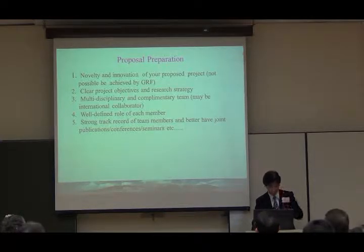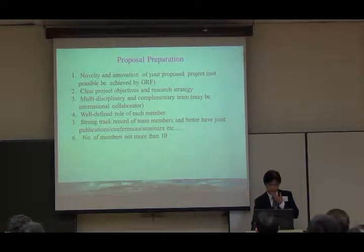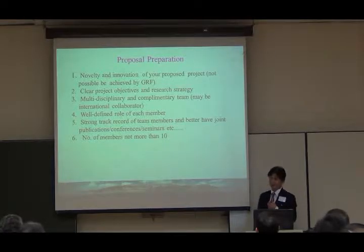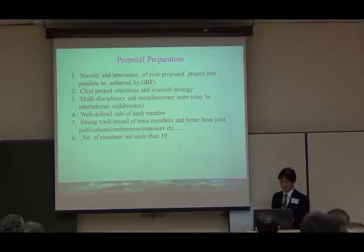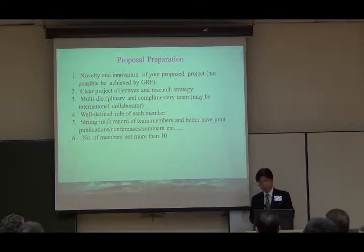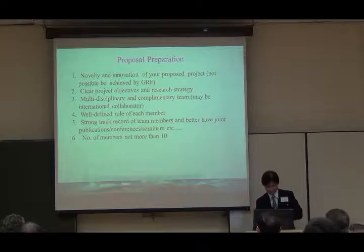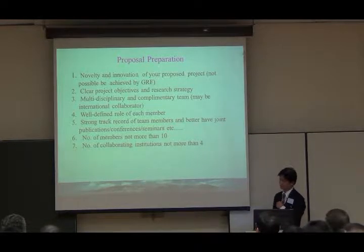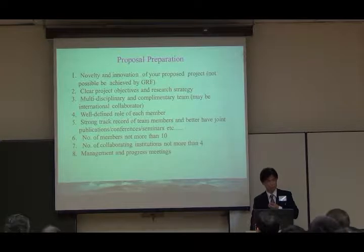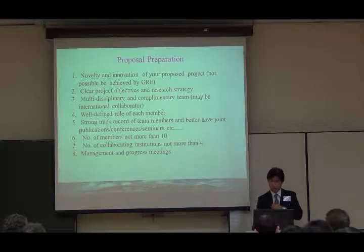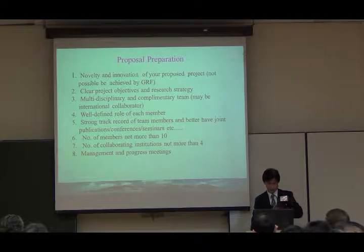My gut feeling — because I failed twice by having too many members — is to be careful about team size. When you get more than ten people across five universities, it's difficult to handle. I would say be careful with more than four institutions per month. It's very important to demonstrate in your proposal that you have a good management strategy and progress meetings — roughly once every six months — so you can monitor the focus of your proposal. Have a reasonable budget with clearly defined efforts.